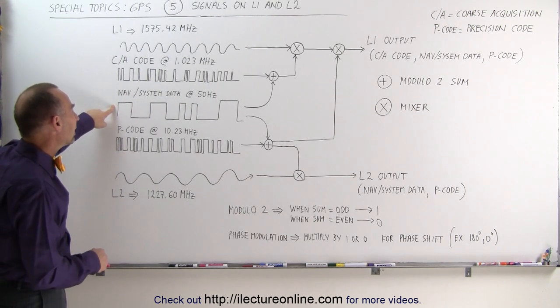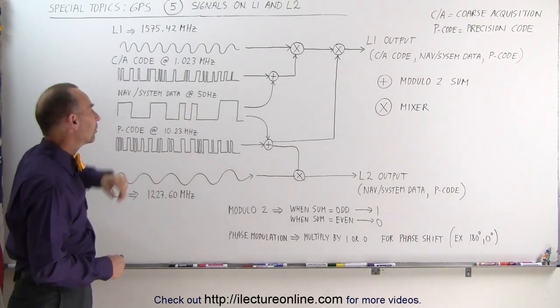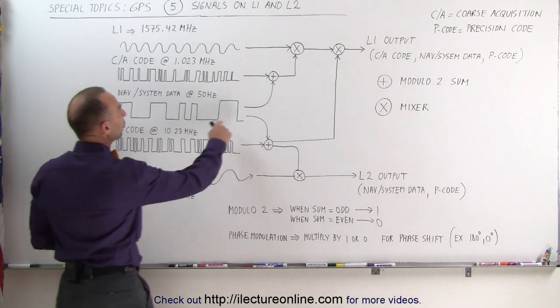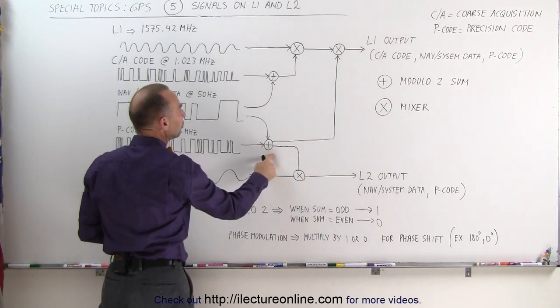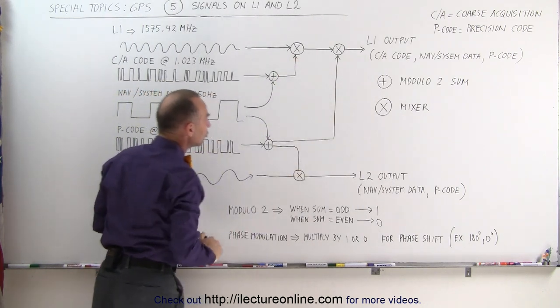Also, there's some navigation system data that is sent at a 50 Hz frequency, very low frequency. Notice that it's summed to both the L1 and the L2 signal, so that the nav and system data goes out on both the L1 and the L2 channels.